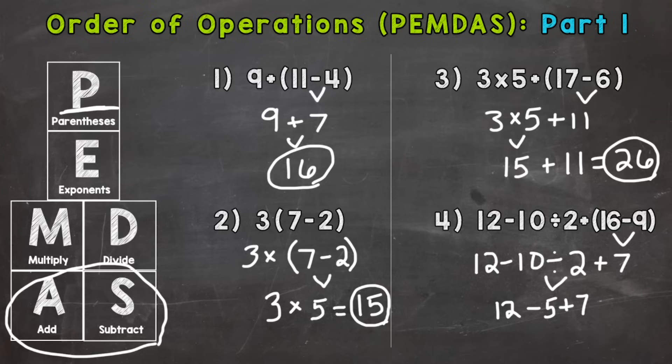So you would do twelve minus five first. Twelve minus five is seven. Bring down your addition and the seven. So we get to seven plus seven which is fourteen. So there you have it.